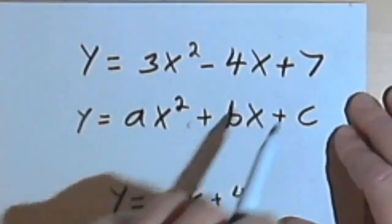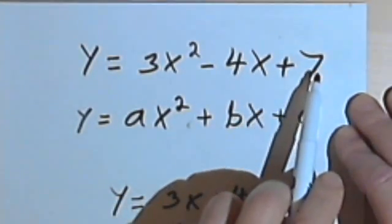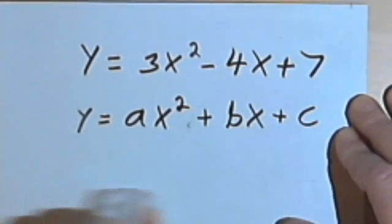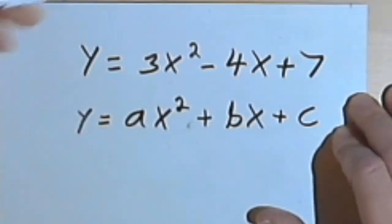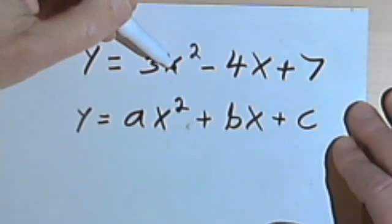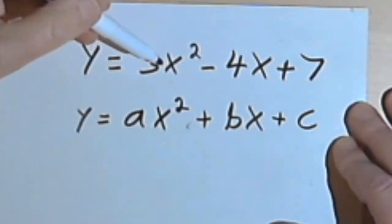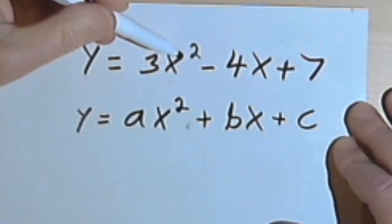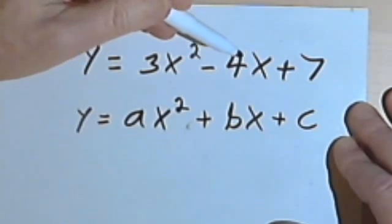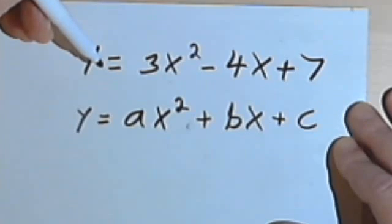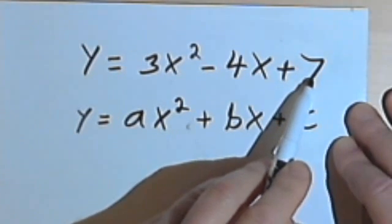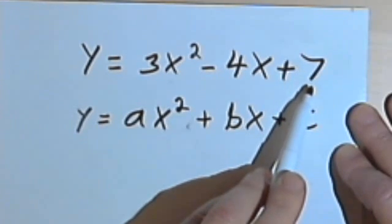Well, for quadratic functions, the last number, the constant that doesn't have any x, is going to be your vertical intercept. The reason for that is very simple. Remember, in any equation, the vertical intercept happens when your x value is zero. So if we take something like y equals 3x squared minus 4x plus 7 and plug zeros in where the x's are, all we're left with is y equals 7. So the c, the constant at the end of the equation, is your vertical intercept.